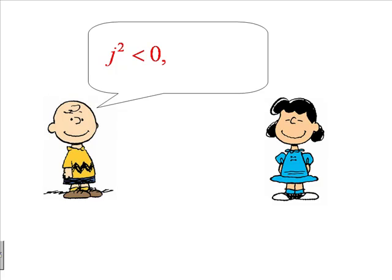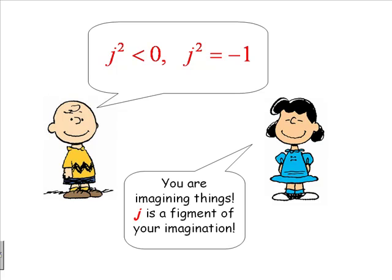And he insisted: what if j squared is negative — j squared is minus one? And they said, a figment of your imagination. J is imaginary.